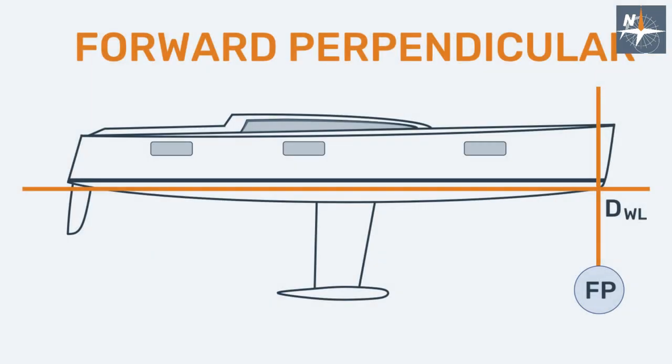The forward perpendicular is the vertical line perpendicular to the design waterline, passing through the forward end of this design waterline.